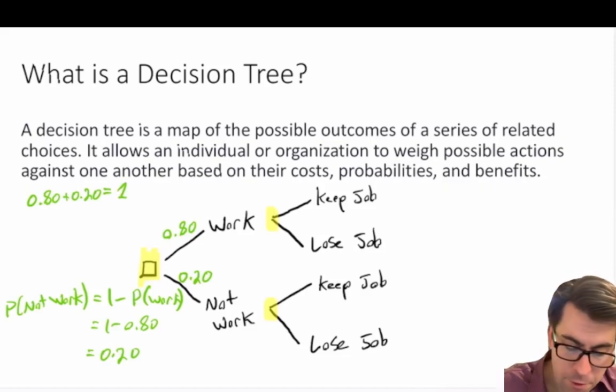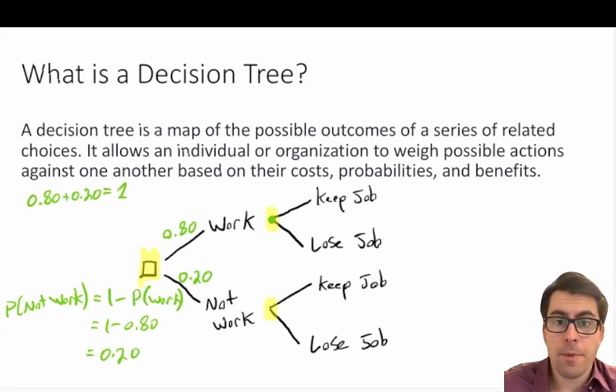Now we can move on to our chance nodes here. So let's just start with our chance node of when we go to work. When we go to work, there's a probability that we're going to keep our job and a probability that we're not going to keep our job.